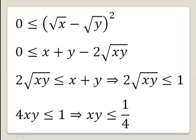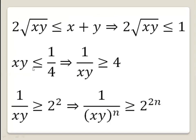Since both sides are positive, we can square both sides to get 4xy ≤ 1, which means xy ≤ 1/4. Flipping both sides gives 1/(xy) ≥ 4, which equals 2². Raising both sides to the power n, we get 1/(xy)ⁿ ≥ 2²ⁿ.